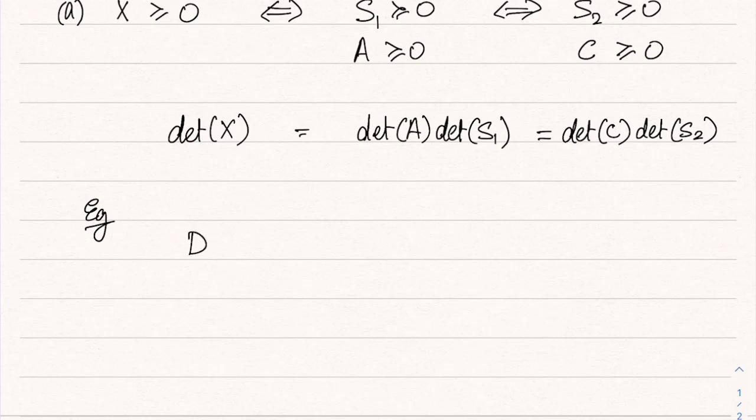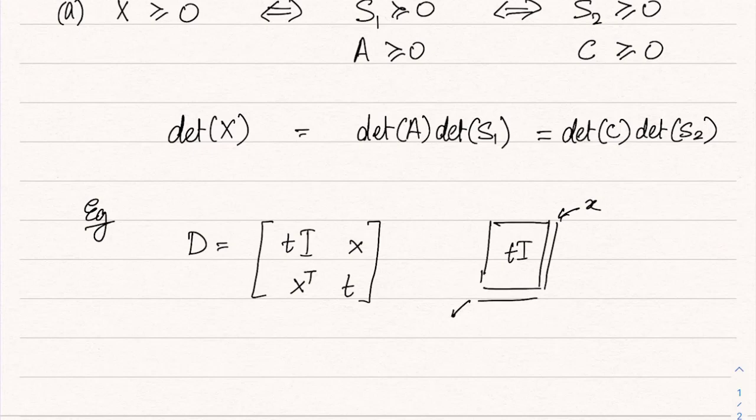So let us say that there is a matrix D, which is of this form. D is t times identity and then a vector x, x transpose and t. So this is one vector. So you can imagine that identity is this, this is t times identity, and then x is this vector. This line is this vector and this is x transpose and t is simply this scalar, right?